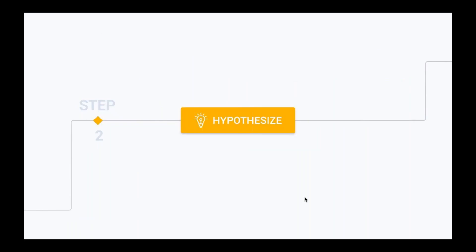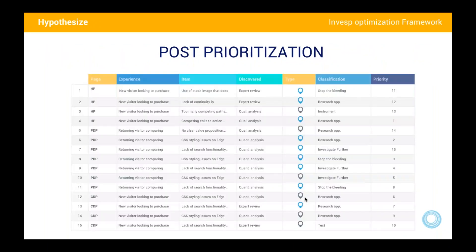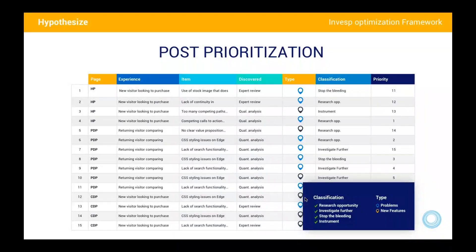Next step is Hypothesize. You can't tackle 100 items — no one has the time or resources. So you prioritize. There are different frameworks for prioritization, but the one we use asks 18 different questions for each item, which forces you to think comprehensively. A good hypothesis should tell you what the problem is, why you think it's a problem — based on analytics, qualitative research, online polling — and what change you expect to make and by how much it will increase conversion rates, such as 10, 12, or 15 percent.